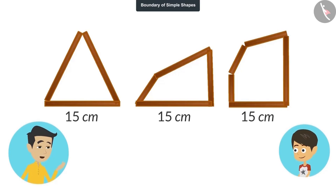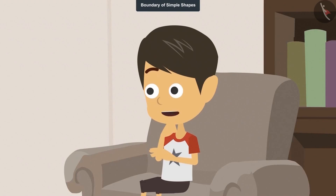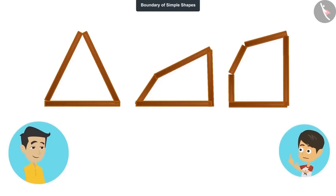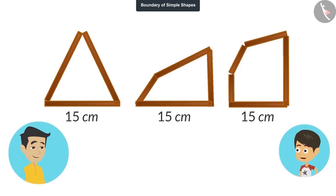You see, the shape of these three figures is different, despite the fact that the length of the boundaries is the same. Now I understand that different shapes can have the same length of boundary. Apart from this, I understood one more thing — I thought that if a figure has more edges, then the length of its boundary will also be more. But it is not so. This figure has three edges, this figure has four edges, and this figure has five edges — yet the length of the boundary for all is 15 centimeters.